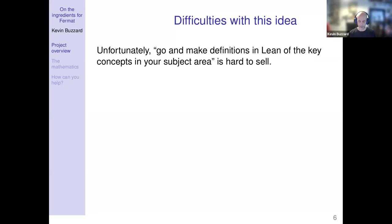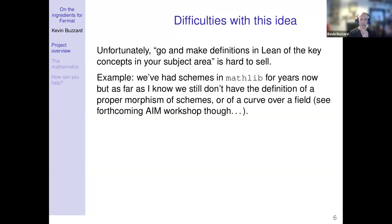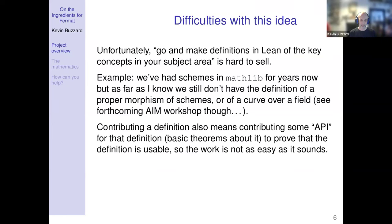It's difficult to tell people to just go away and formalize definition after definition. For example, we defined schemes several years ago, but we don't have the definition of a curve over a field or a proper morphism of schemes. It's not difficult to make that definition, but one would have to decide what you want it to be, translate that into computer language, and then actually prove the definition is usable — that you can prove basic theorems about it. There's an art to definitions.